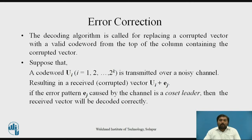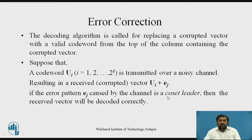For example, suppose you have a codeword u which is transmitted over a noisy channel. Because of that noise, an error occurs in the received vector r, where r equals u plus e, and e is the error pattern added to the transmitted codeword, giving you the received vector r with the error. If the error pattern e caused by the channel is a coset leader — which is present in the first column of the standard array — then the received vector can be decoded correctly.